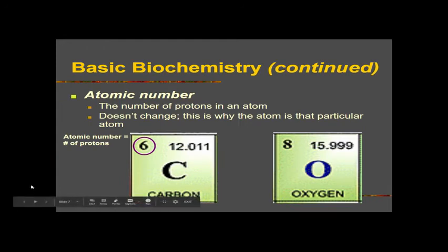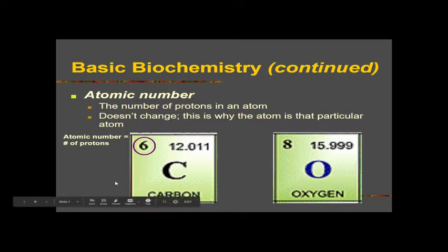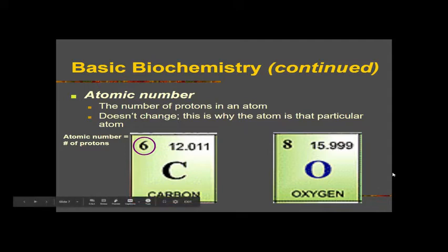The atomic number — when we look at the periodic table, there are numbers on these different elements. The atomic number tells us how many protons are in that atom. The number of protons never changes, so carbon will always have six protons — that's its atomic number. If we look at oxygen, the atomic number is eight, telling us that oxygen always has eight protons.